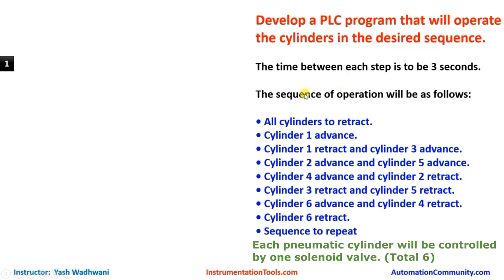In the industry, a particular machine consists of several numbers of pneumatic or hydraulic cylinders which operate in a desired sequence based on the process. For study purposes we have selected one random sequence, and we have assumed the time between each step is three seconds.